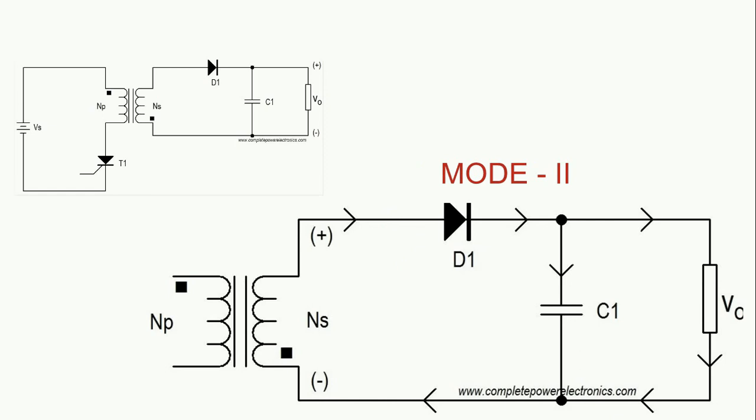So in mode two, when switch T1 is turned off, when the switch is turned off the mode two will start after that. As per the property of coil, the polarity of the secondary side reverses at this moment. That is, top side will become positive and bottom will become negative, so the diode is in forward biased and the capacitor keeps on getting charged. This is the operation.